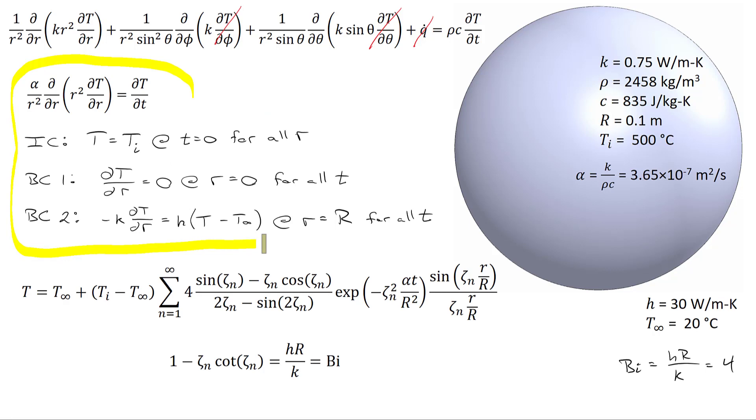The solution to this partial differential equation, subject to the initial condition and these two boundary conditions, is not particularly straightforward. You'll have to ask a mathematician how we got from there to this solution. The solution is tricky to implement for two reasons. One reason is this infinite sum, which isn't too hard, but the second problem is these values of zeta, which is equal to the Biot number—there's no way to solve for zeta analytically. The only way to get a value of zeta is to guess and check or use an iterative numerical solver.